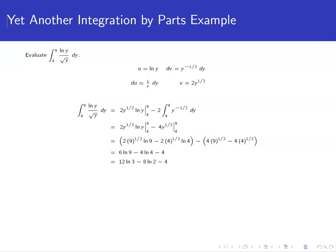So we're going to let our u equal natural log of y, then our du is going to be 1 over y dy. That's going to leave dv being y to the negative 1 half, if I move that square root of y up to the top, dy. And then I take an antiderivative there. Antiderivative for that is going to be 2y to the 1 half.